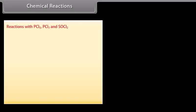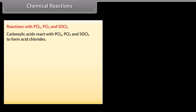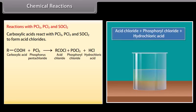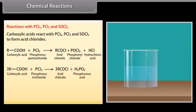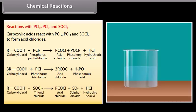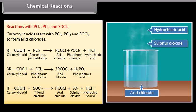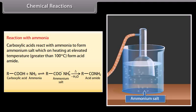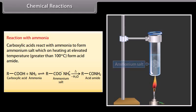Reactions with phosphorus pentachloride, phosphorus trichloride, and thionyl chloride: carboxylic acids react with these reagents to form acid chlorides. Carboxylic acid reacts with PCl5 to form acid chlorides, phosphoryl chloride, and hydrochloric acid; with PCl3 to form acid chlorides and phosphorous acid; and with thionyl chloride to form acid chlorides, sulfur dioxide, and hydrochloric acid. Reaction with ammonia: carboxylic acids react with ammonia to form ammonium salt on heating at elevated temperature (greater than 100°C).